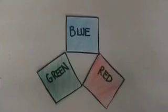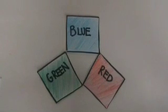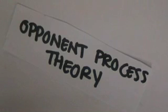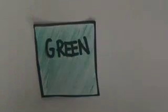The trichromatic theory states that the retina contains three different color receptors, sensitive to red, green, and blue, and when stimulated, combine to produce perception of any color. The opponent process theory suggests that color perception is controlled by the activity of two opponent systems: a blue-yellow mechanism and a red-green mechanism.